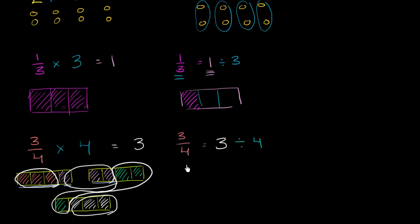So the same idea again, 3 over 4 is the same thing as 3 divided by 4. And in general, this is true. The fraction symbol here can be interpreted as division.